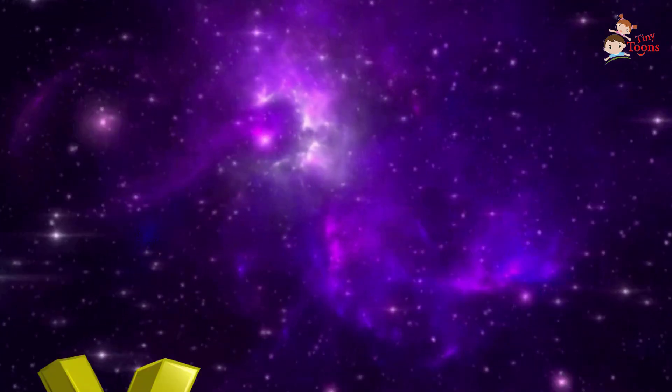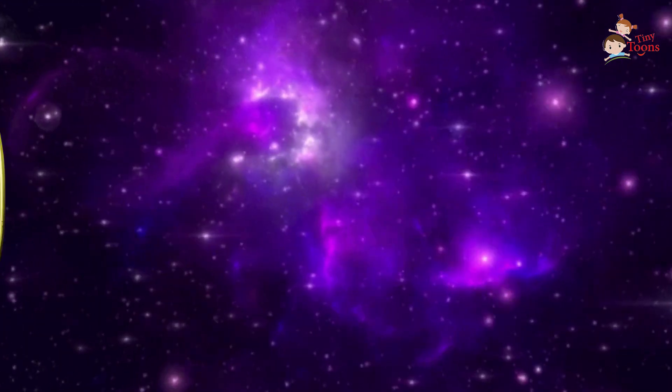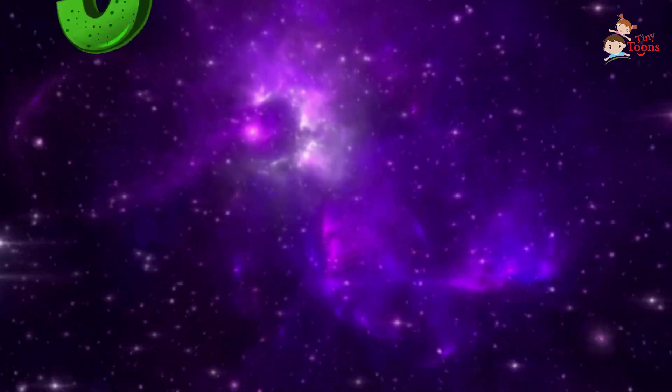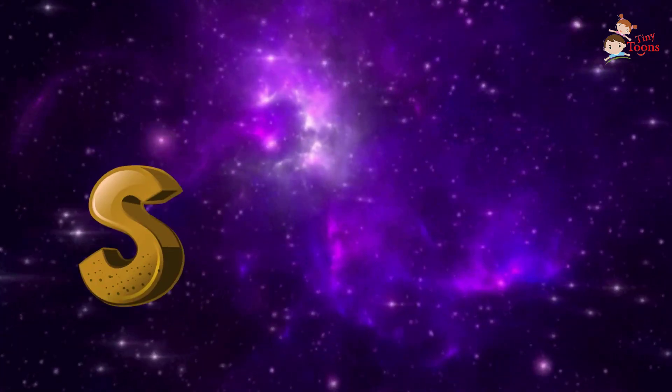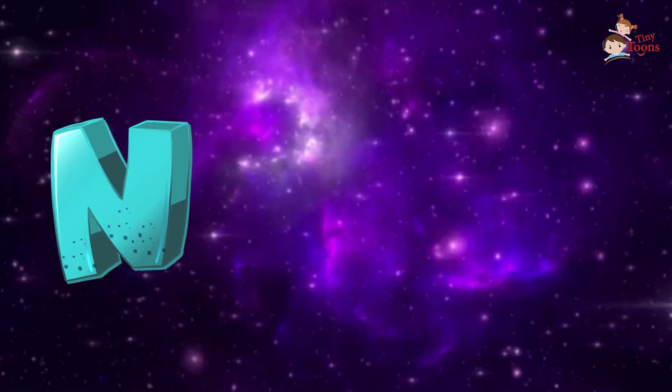M is for Mercury, V is for Venus, E is for Planet Earth, M is for Mars, J is for Jupiter, S is for Saturn, U is for Uranus, N is for Neptune.